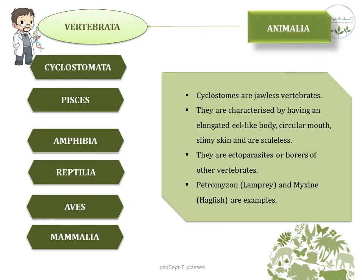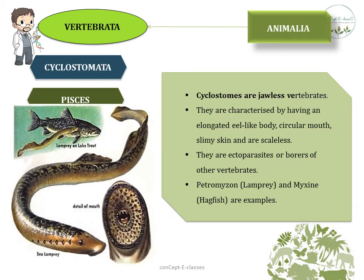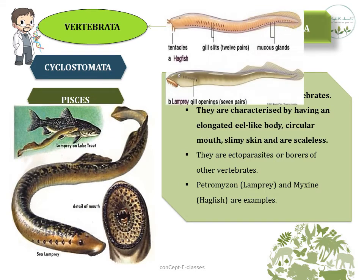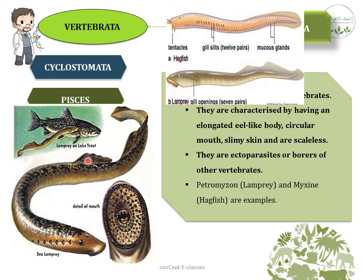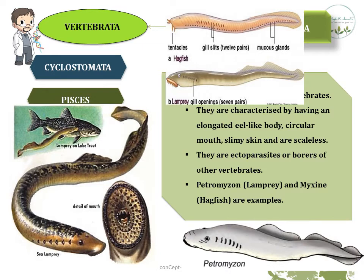The first class under Vertebrata is Cyclostomata. Cyclostomes are jawless vertebrates. Their main characteristics are a long elongated eel-like body and a circular mouth. They have very slimy skin and are scaleless. They are ectoparasites — parasites that live on the outside of the host — of other vertebrates. Main examples are Petromyzon, also called lamprey, and hagfish.